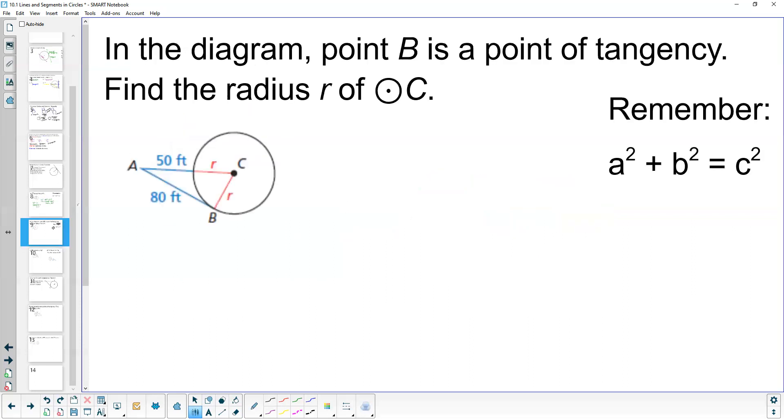Let's look at another example using that same idea. In this diagram, point B is the point of tangency. We want to find the radius r of circle C. Since that's the point of tangency, segment AB is our tangent, and this angle at B is 90 degrees. Using the Pythagorean theorem with these unknown values, we can figure out the radius of our circle.